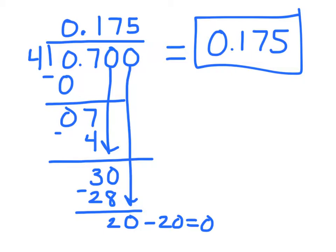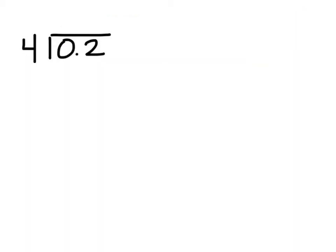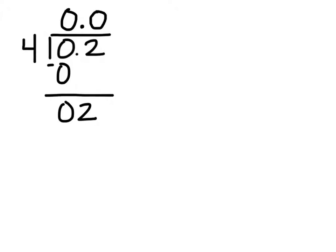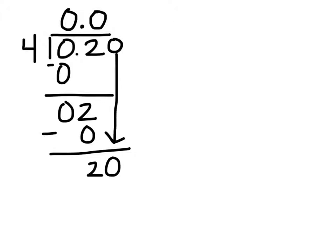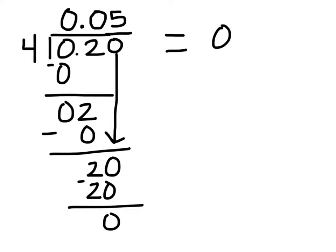Let's try one more example before you do some on your own: how many times will 4 go into 2 tenths? Dividing the ones column: 4 goes into 0 zero times. Let's bring up our decimal place. 4 doesn't go into 2, so we have to add a 0 here because 4 can't go into 2. So 4 times 0 is once again 0, leaving us with 2. Let's add a 0 and drop it down. How many times does 4 go into 20? That's right, 5. 5 times 4 is 20, leaving us with a remainder of 0. So 2 tenths divided by 4 equals 5 hundredths.